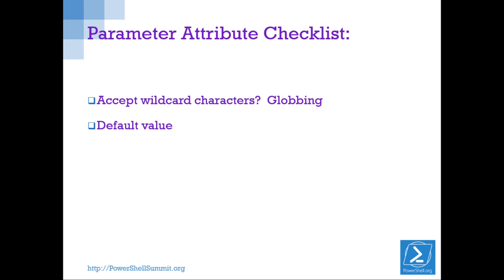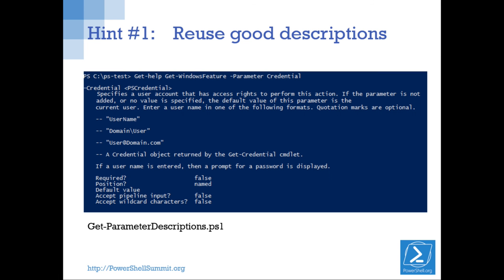If I have a ComputerName parameter, the effect is that it specifies the computer and it's required if using a remote computer — the default is the local computer. Mention the default value for all optional parameters, describe what it does, explain how to get the parameter values especially if they're complex, and talk about interaction with other parameters. Parameter attributes your tools will generally pick up. But they cannot get globbing — whether you can use wildcard characters in the parameter value — and they can't get the default value.